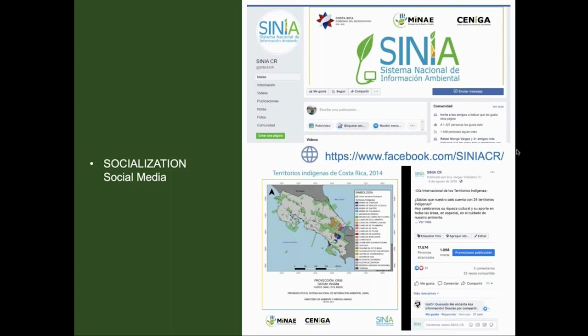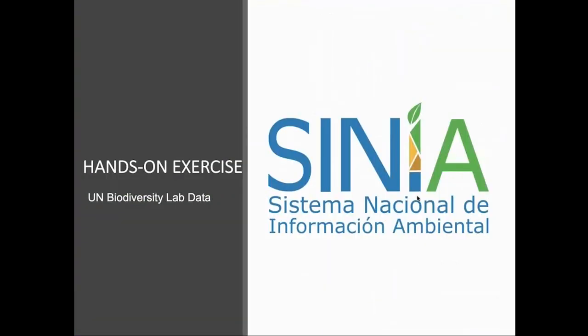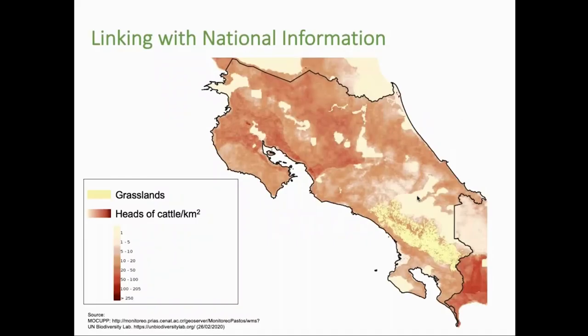We show an example of one of our more popular publications, which provides information about the location of indigenous territories in our country. Now we will go through an exercise that shows how we are integrating the UN Biodiversity Lab data and the information we generated locally within the National System of Environmental Information. In February 2020, the Ministry of Environment and Energy published new data layers created with the tool Mokub, which itself was developed by the Prius Laboratory with support from the UNDP. This tool monitors key productive landscapes which include pineapple, oil palm, and grasses less than 30% tree cover to recover, with the latest data from year 2018.